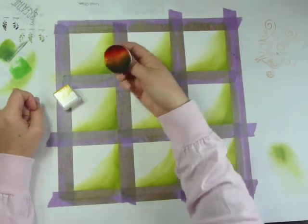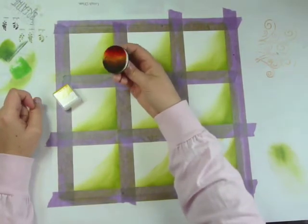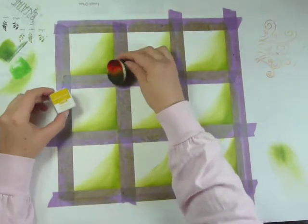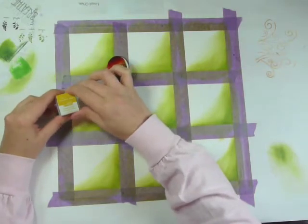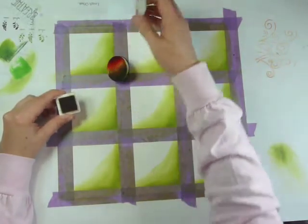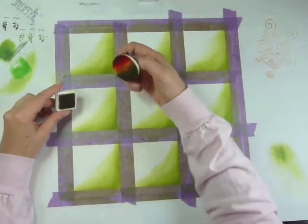Okay, so to apply the color, I'm using the foam applicator from Club Scrap, and I'm using Stampin' Up! More Mustard Dye ink. You can really use any sort of ink.